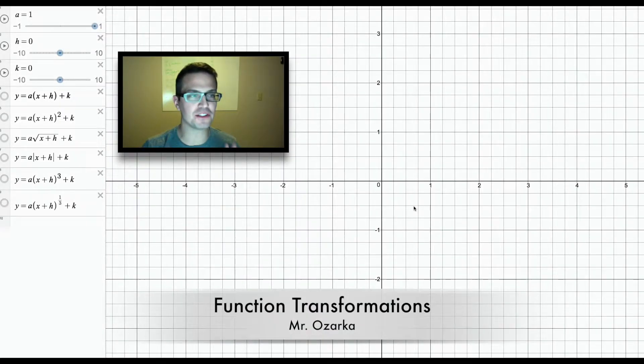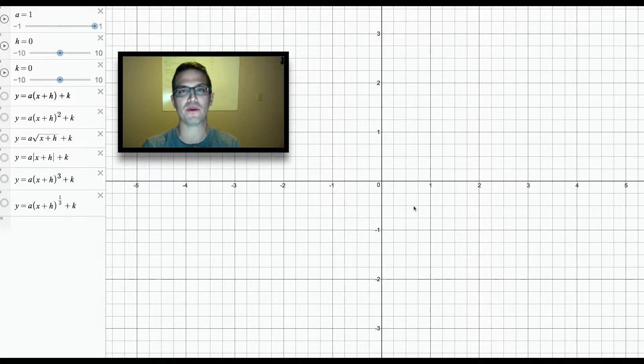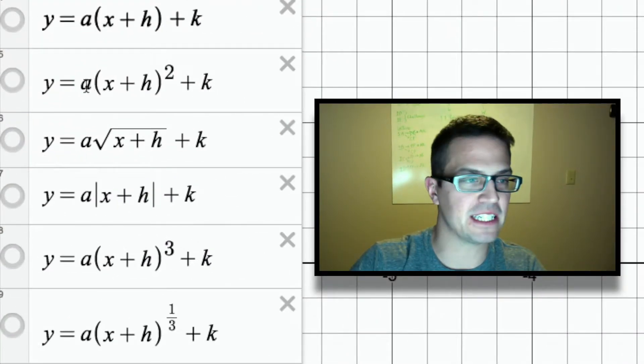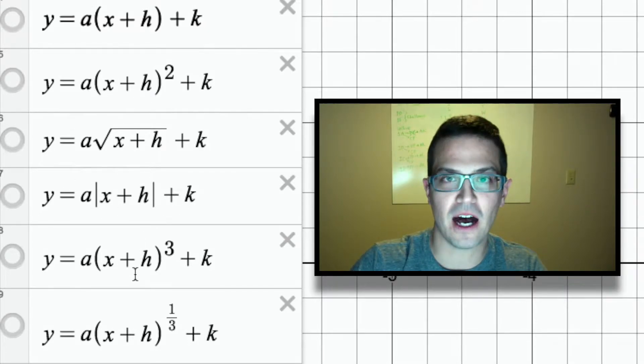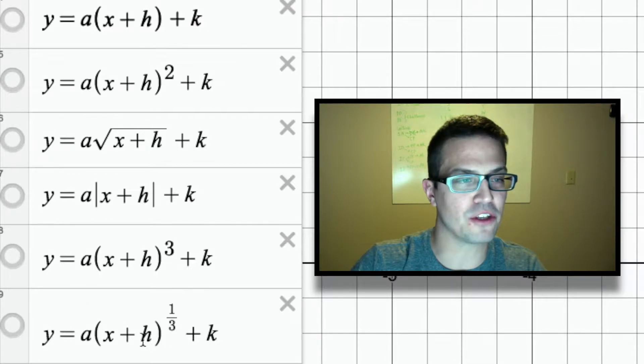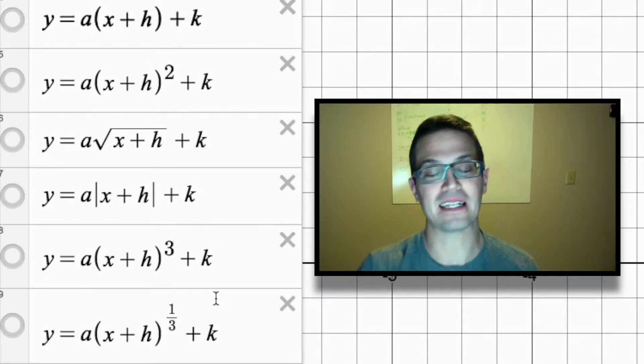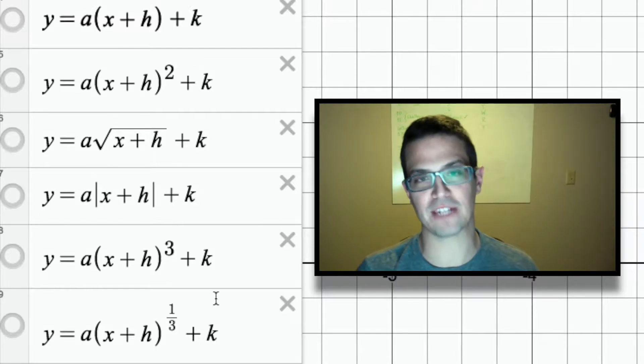All right, so this is going to be a video about function transformations, and we're going to be using the parent functions that we're going to be going over in the class. If you can see right here, I have a linear parent function here, and then I have a quadratic, square root, absolute value, cubed, cubic, and then cube root. So I have all of the ones that we're going to be going over in class specifically to go over these transformations.